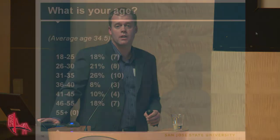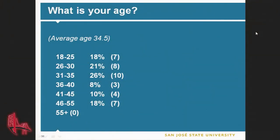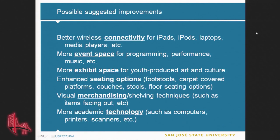We had 40 surveys completed, two rounds from May to October. The average age was mid-30s — older than our students who tend to be mid to late 20s — and 85% female. We told them the kinds of improvements we were thinking of, and these are some of the things they responded to. Wireless connectivity was very important, kind of interesting, because in Second Life there's no wireless connectivity.